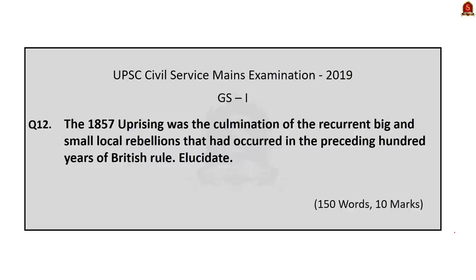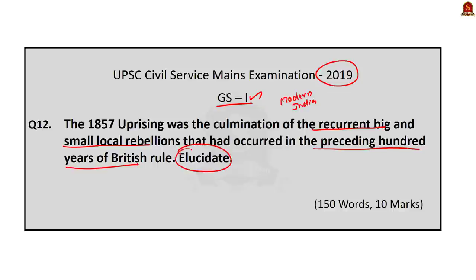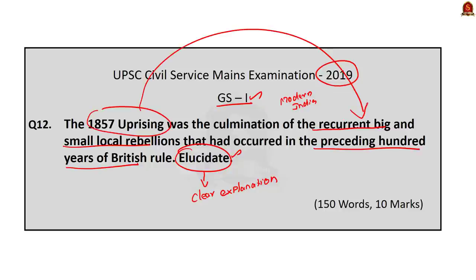Now let us take up the mains question for discussion. This is from the 2019 General Studies Paper 1, also from the static part of Modern India. The question reads: 'The 1857 uprising was the culmination of the recurring big and small rebellions that had occurred in the preceding hundred years of British rule. Elucidate.' The keyword here is 'elucidate,' which means to explain clearly — so while writing the answer, you must explain clearly how the 1857 uprising was indeed a culmination of those rebellions.